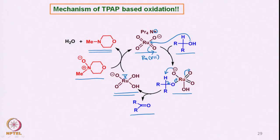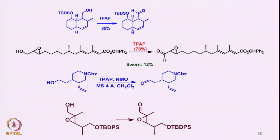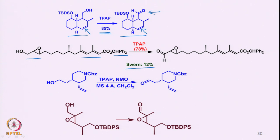This is the mechanism proposed for oxidation of alcohols to the corresponding ketones or aldehydes. Importantly, this does not react further with aldehydes to form the acid. For example, an alcohol having a double bond is converted to the corresponding aldehyde in 85% yield. A substrate having an epoxy alcohol and two double bonds, which with a certain oxidizing agent gave only 12% of the oxidized product, gives 78% of the corresponding aldehyde with TPAP.